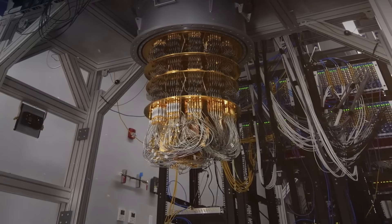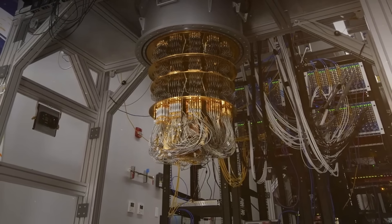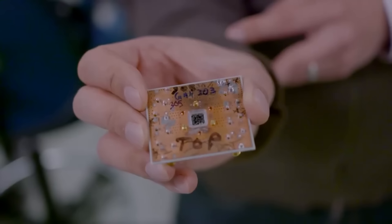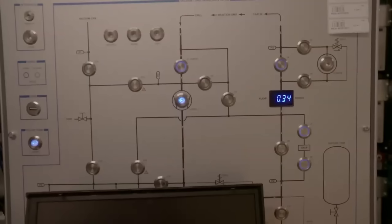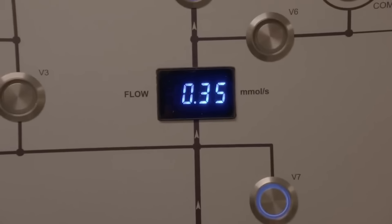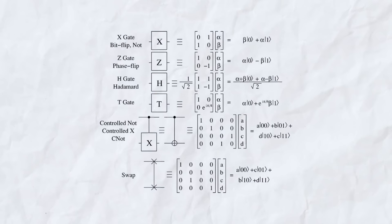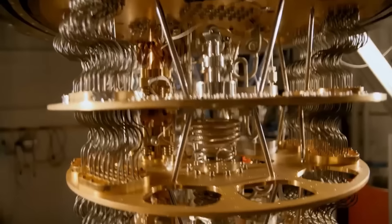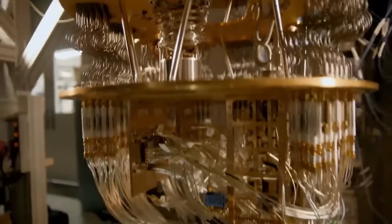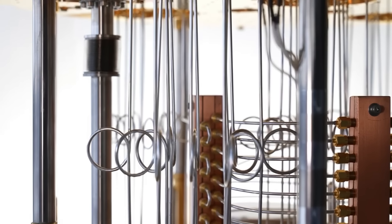However, quantum systems, including Sycamore, are a bit like high-performance athletes. They're incredibly capable, but also prone to errors. What is not a challenge? Everything is a challenge. The error rate of quantum gates, which are operations on qubits, is critically low in Sycamore. This is important because it means Sycamore can handle the intricate dance of quantum computations without stepping on its own toes too often.